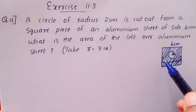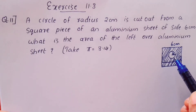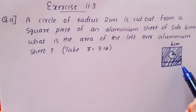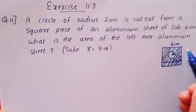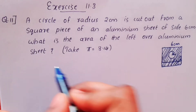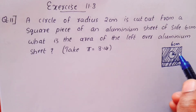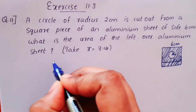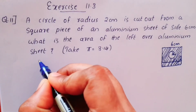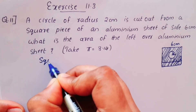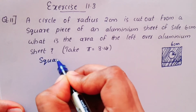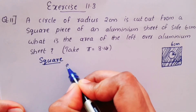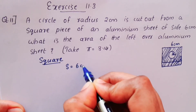Now we will find the area of the square. The side of the square piece is 6 cm.